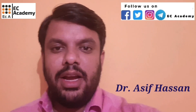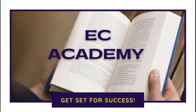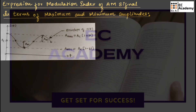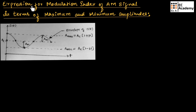Hello friends, welcome to ESEA Academy. In this lecture, let us understand the expression for modulation index of AM signal in terms of maximum and minimum amplitude. Let us consider an envelope of AM modulated signal with maximum amplitude value as A maximum and minimum amplitude value as A minimum.